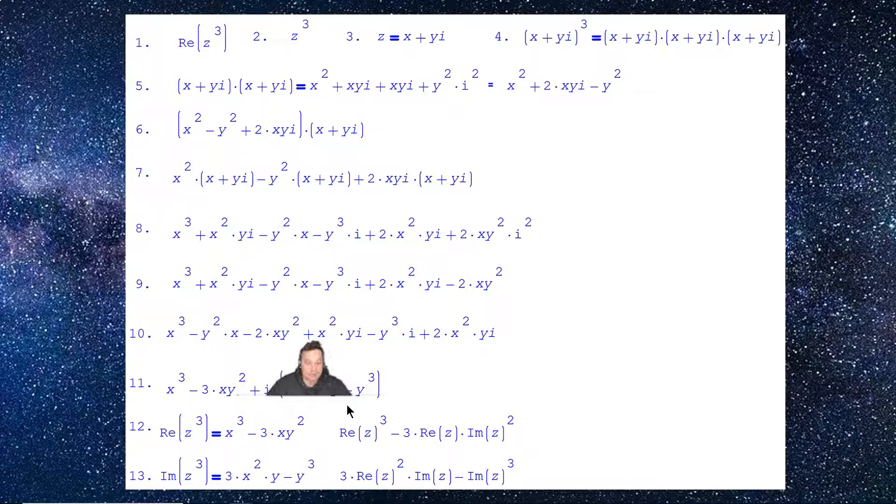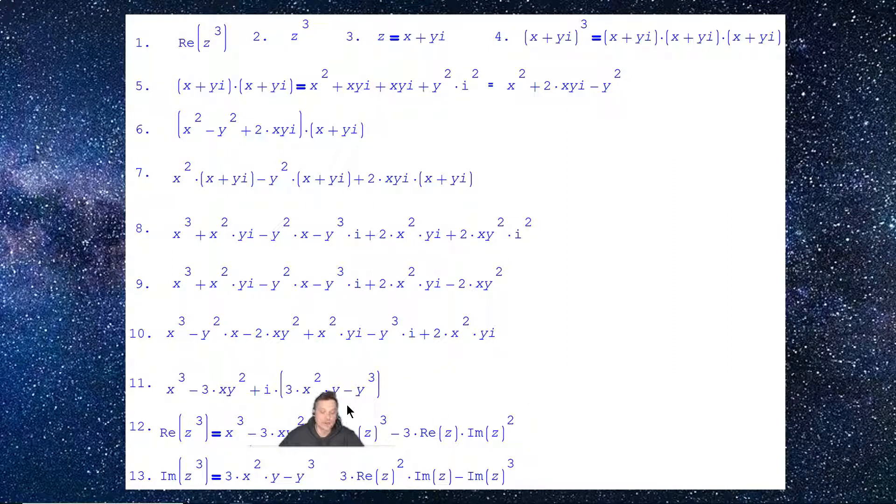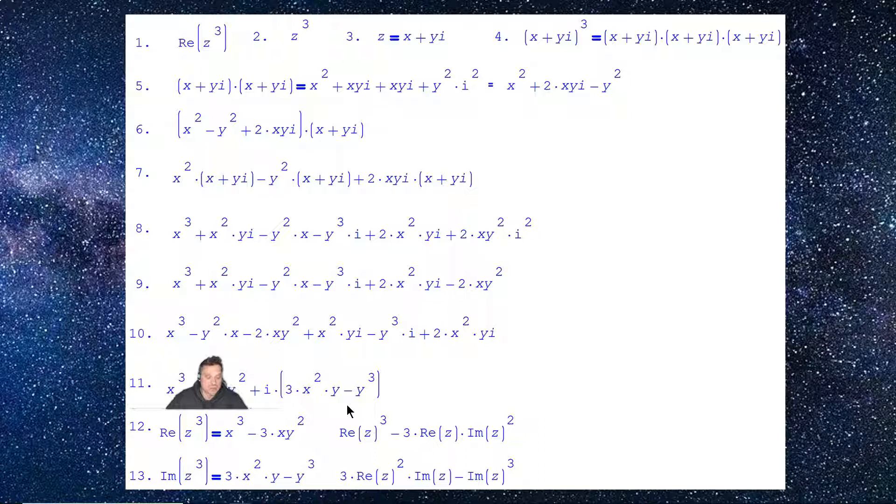I have x squared yi, and I also have over here 2x squared yi. So I can combine those into 3x squared y after the i is factored from that term. And then also I have this extra negative y cubed. So that just comes down as negative y cubed. So what this allows me to say at the very end is down below me, essentially, that the real part of z cubed is x cubed minus 3xy squared.